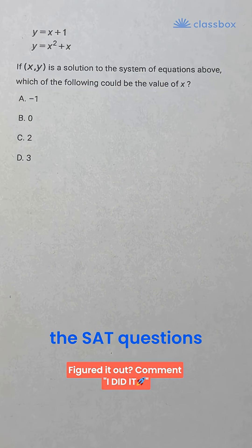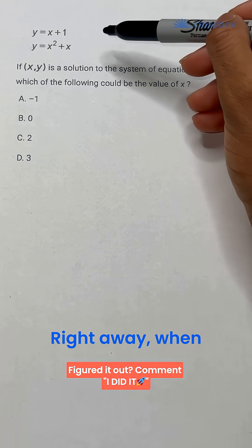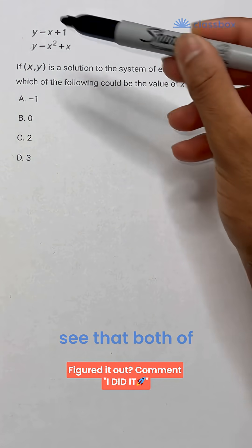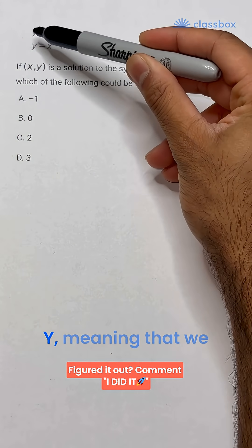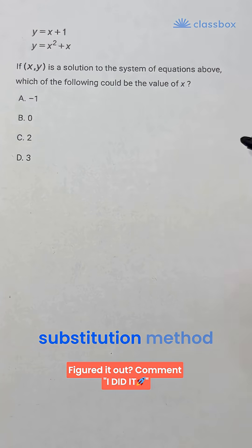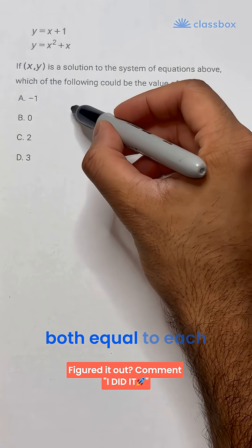These are one of the SAT questions that we can get done in under 30 seconds real quick. Right away, when we're solving the system of equations, we could see that both of these are equal to y, meaning that we could use a substitution method by setting these both equal to each other.